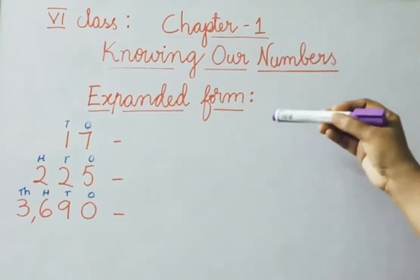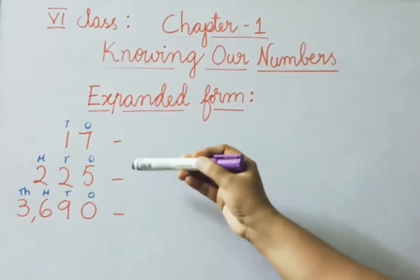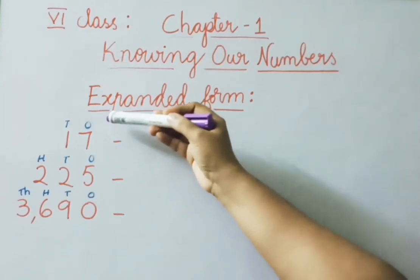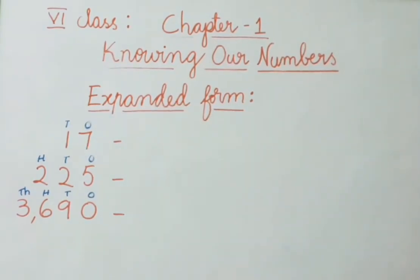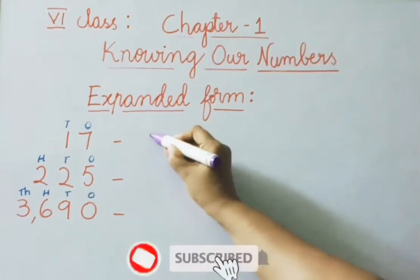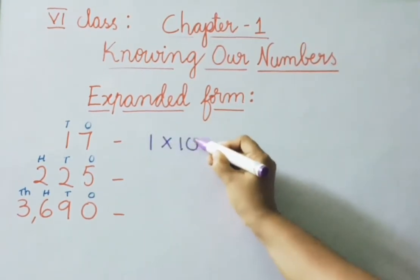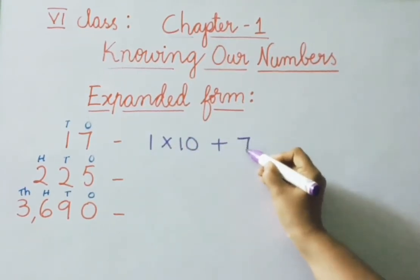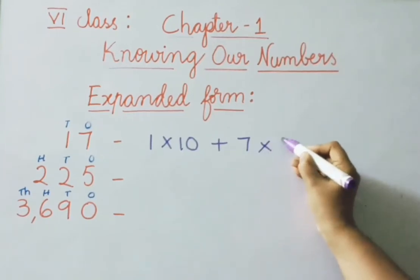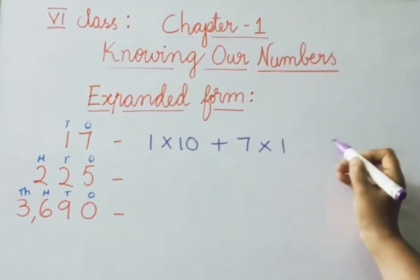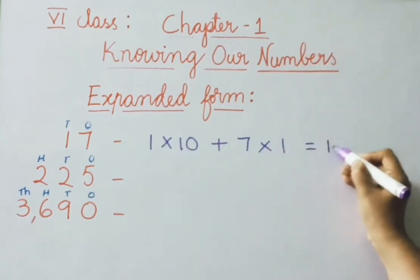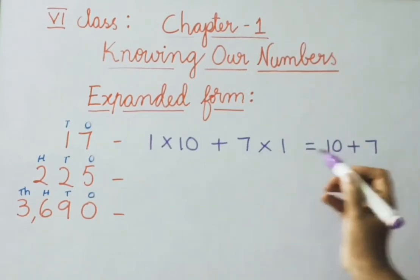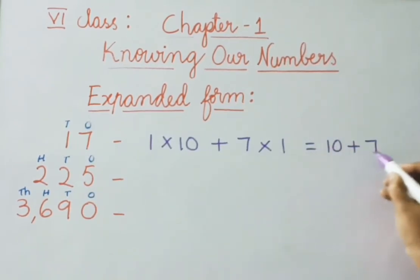Expanded form — let us see how to write an expanded form. First example: 17. Above the number we have entered the places ones and tens. Tens place digit is 1, so write 1 multiplied by 10. Plus, ones place digit is 7, so write 7 multiplied by 1. That gives 1 × 10 = 10, plus 7 × 1 = 7. So 17 in expanded form is 10 + 7.